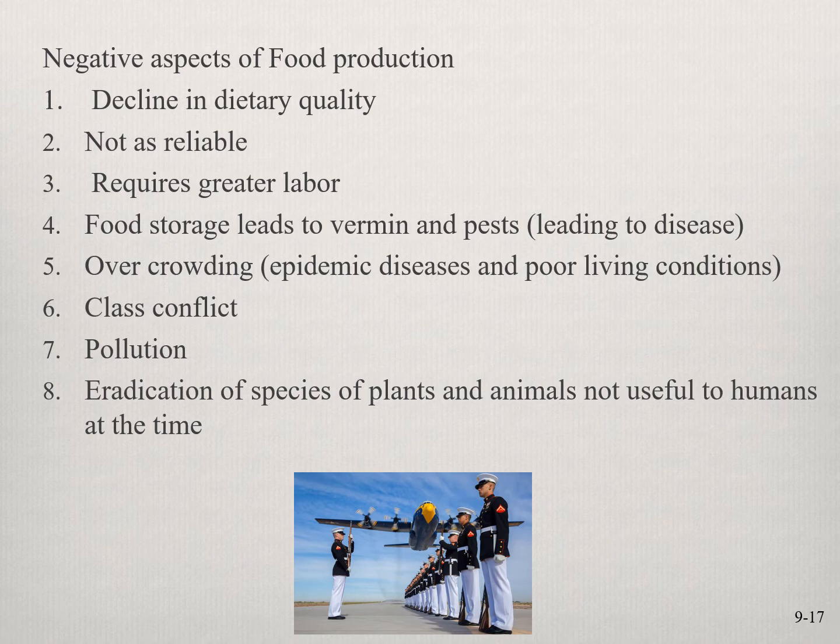You don't have class conflict if you don't have class. Once you have agriculture, there's labor differentiation — lawyers who have never been on a farm. You get a bureaucratic class, a leadership class, a priest class, and many laborers of different types. Class conflict follows. Agriculture also brings pollution — people living in cities produce waste. And in food production we tend to eradicate species we can't currently see as useful, and later realize, too late, that they had medicinal or ecological value.